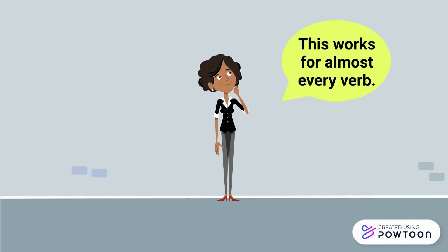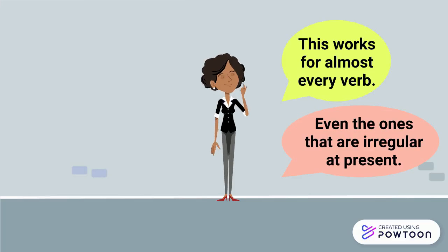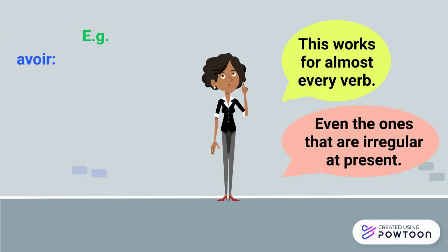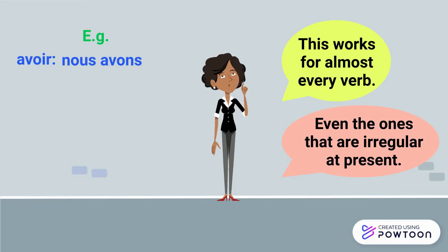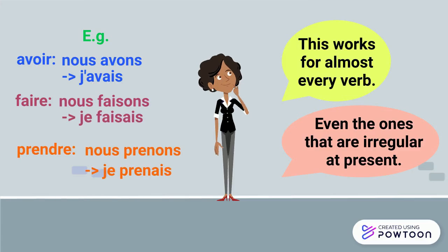This works for almost every verb, even the ones that are irregular at the present tense. For instance, avoir: nous avons at the present → j'avais at the imperfect. Faire: nous faisons → je faisais. Prendre: nous prenons → je prenais. And so on.